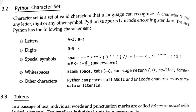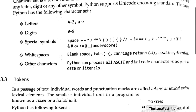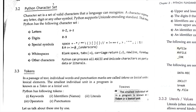Here comes the first topic: Python character sets. Characters are whatever we can write — that is 'a to z'. A character set in Python is a set of valid characters that a language can recognize. It can be letters a to z uppercase or lowercase, digits 0 to 9, and special symbols like star, slash, brackets, equal to, exclamation mark, and white spaces. This all makes up the Python character set.